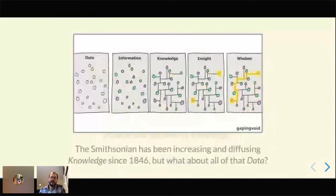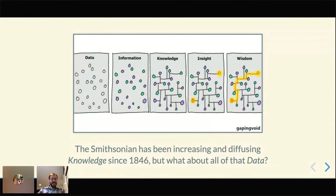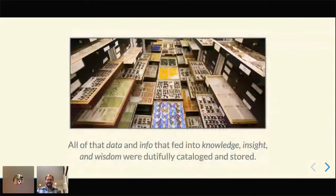There's a pretty cool comic I came across a few years ago that I printed out and stuck on my desk. It shows the progression from data, where you're collecting raw data out in the field, and it becomes information as you connect different pieces, then knowledge, insight, and finally wisdom. I've also seen this comic extended recently to show connections that aren't there, labeled conspiracy theories. The Smithsonian has been increasing and diffusing knowledge, but what about all of that raw data?